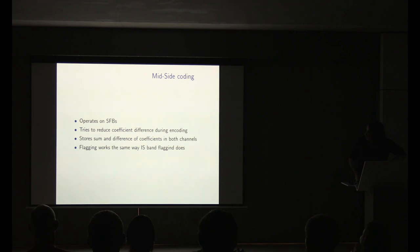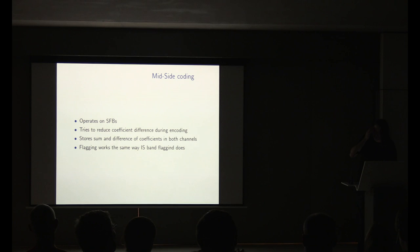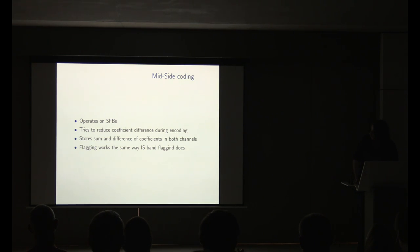Mid-side coding — I won't say much about it because it's mid-side coding; it's used in FLAC. It's a very common technique to minimize coefficient cost. It exploits the fact that channels might have similar coefficients — if you store the sum and difference, you can easily restore the originals, and hopefully it costs less. This is not enabled by default, but we will enable it by default. It works reasonably well.